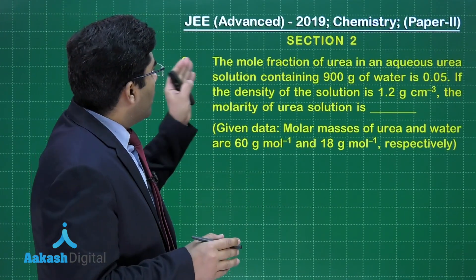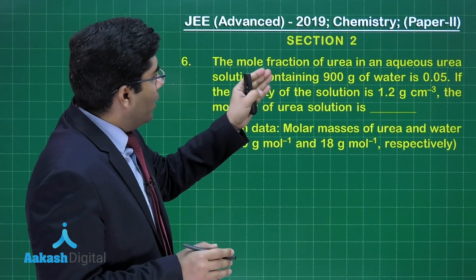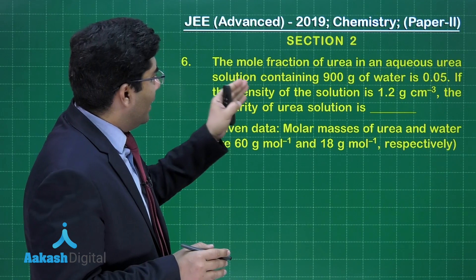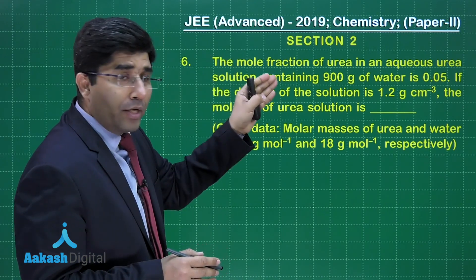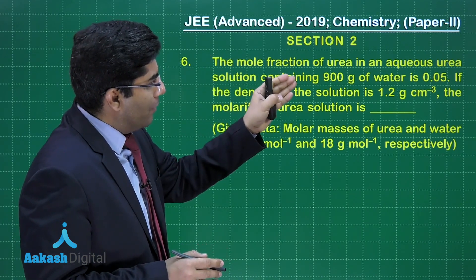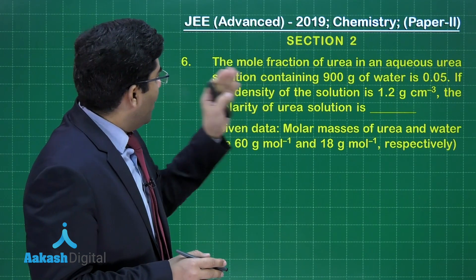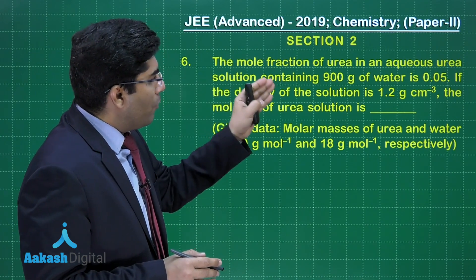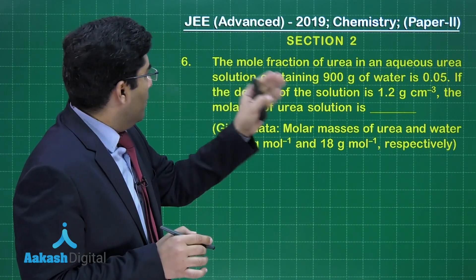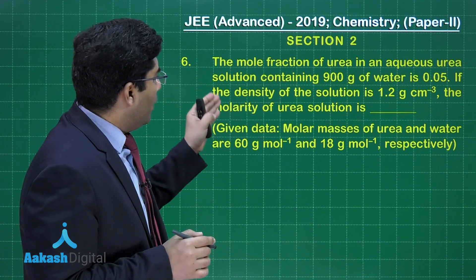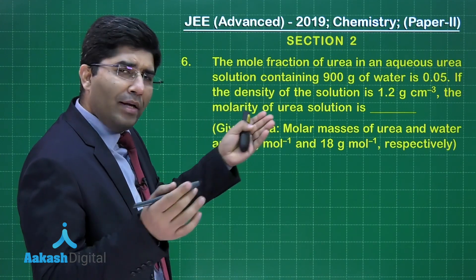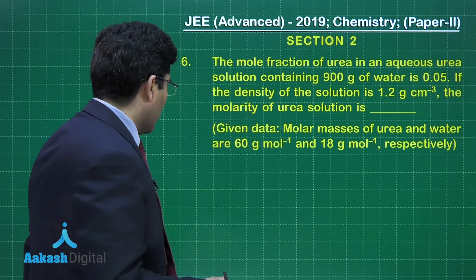In this question, he is asking: the mole fraction of urea in an aqueous urea solution containing 900 grams of water is 0.05. If the density of the solution is 1.2 gram per centimeter cube, the molarity of the urea solution is what we have to find out.